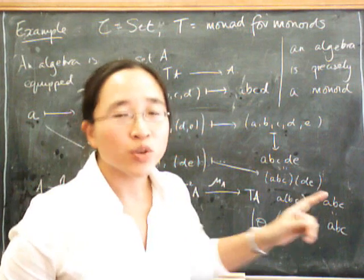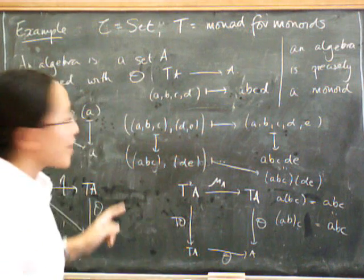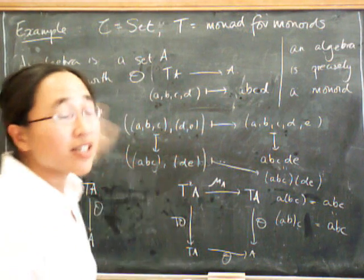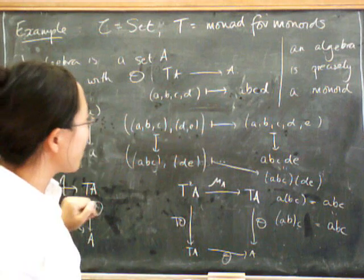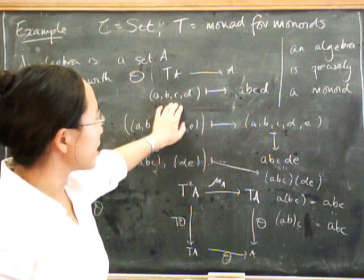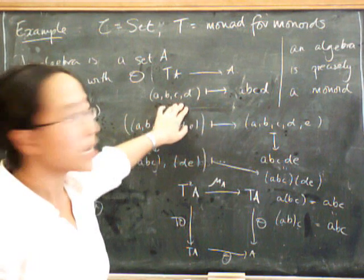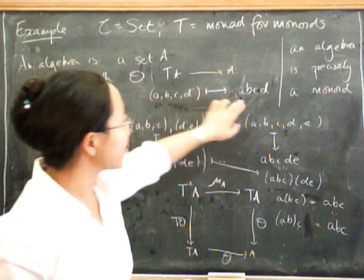One of the questions is, where does the unit for this monoid come from? The first answer is that it doesn't come from this unit axiom over here, but what it actually comes from is from the empty word here. There is an empty word, remember, and that has to go somewhere.